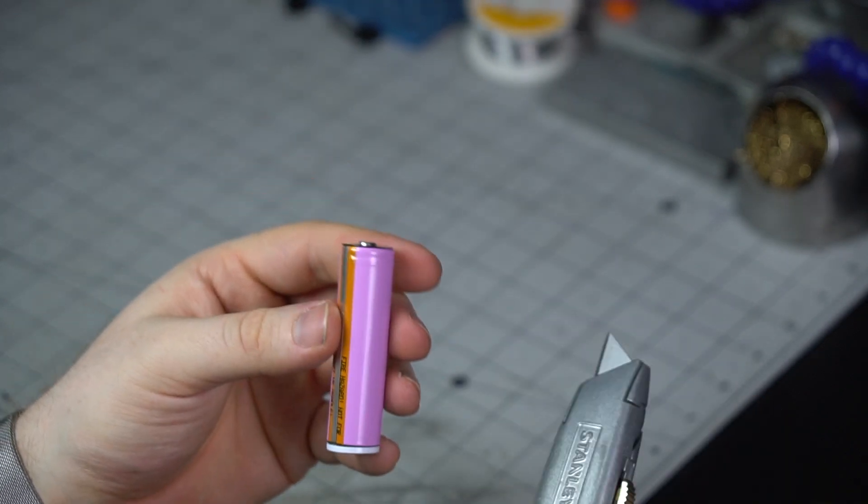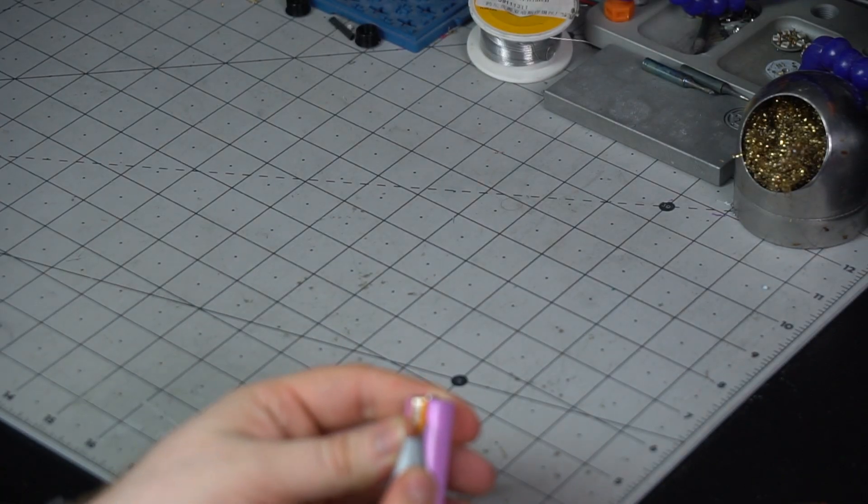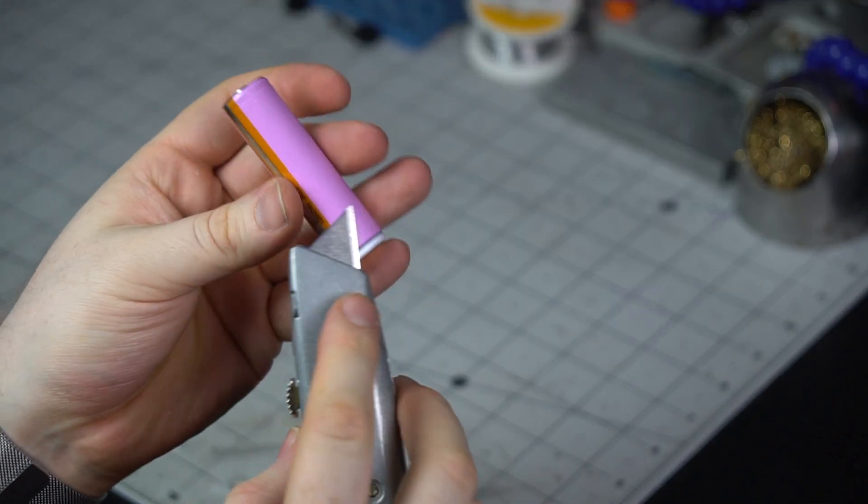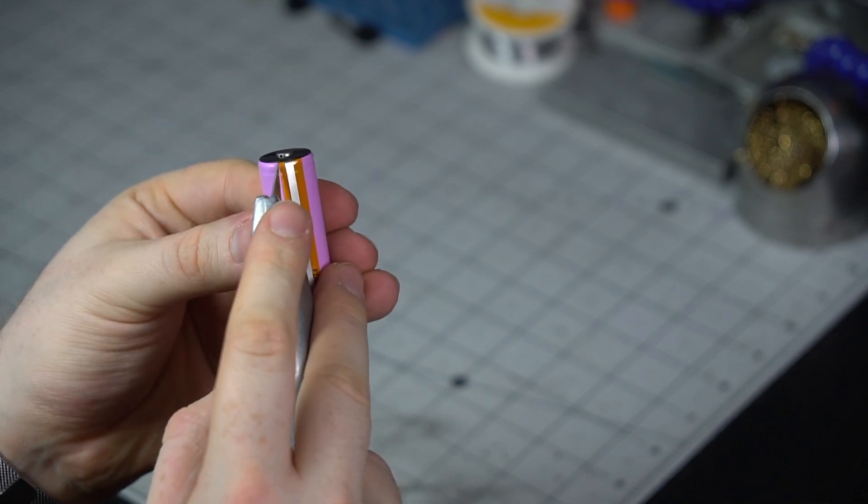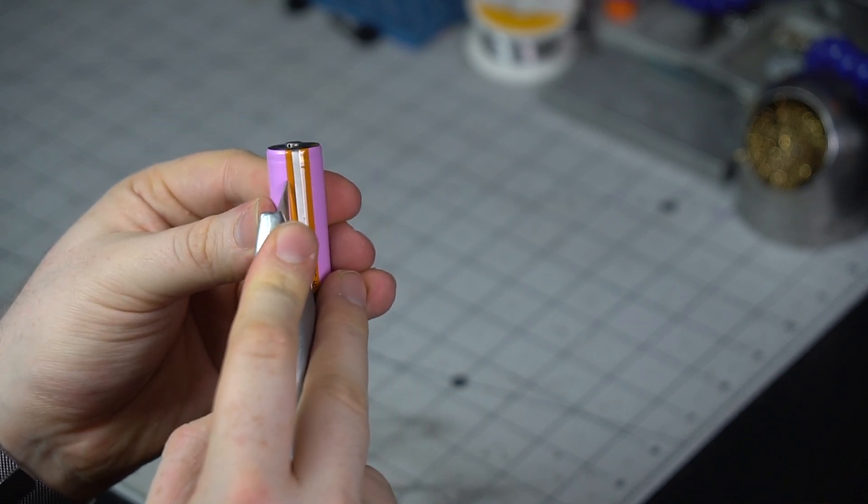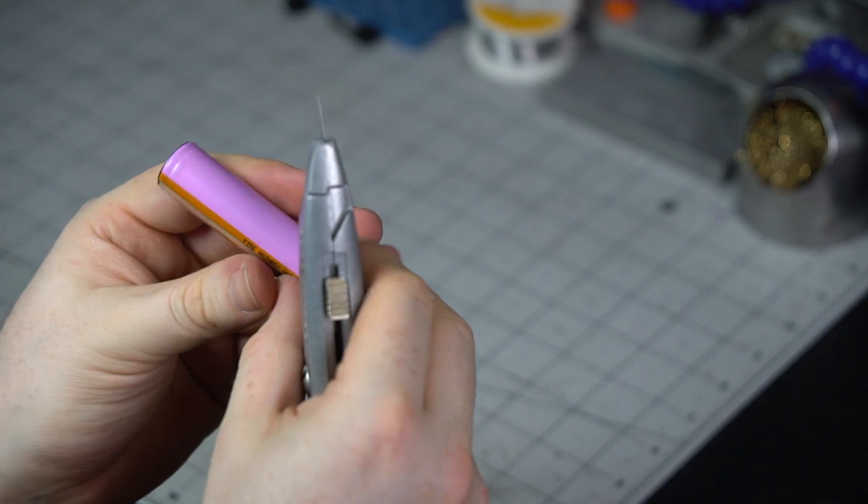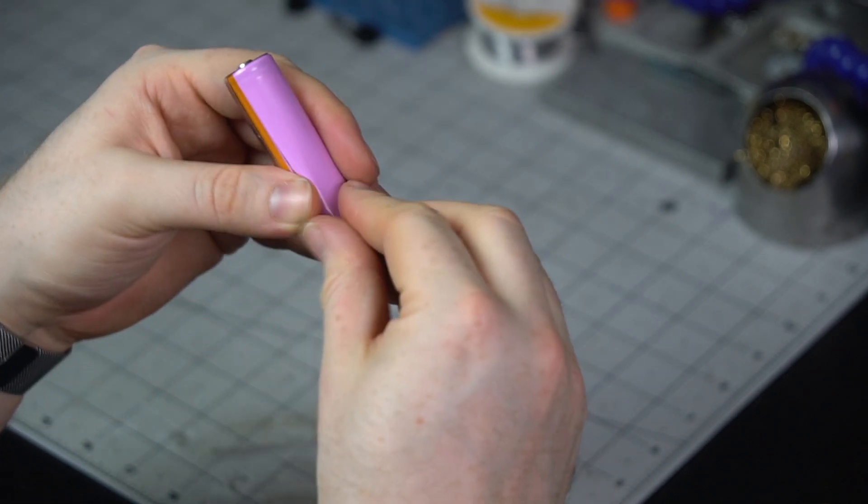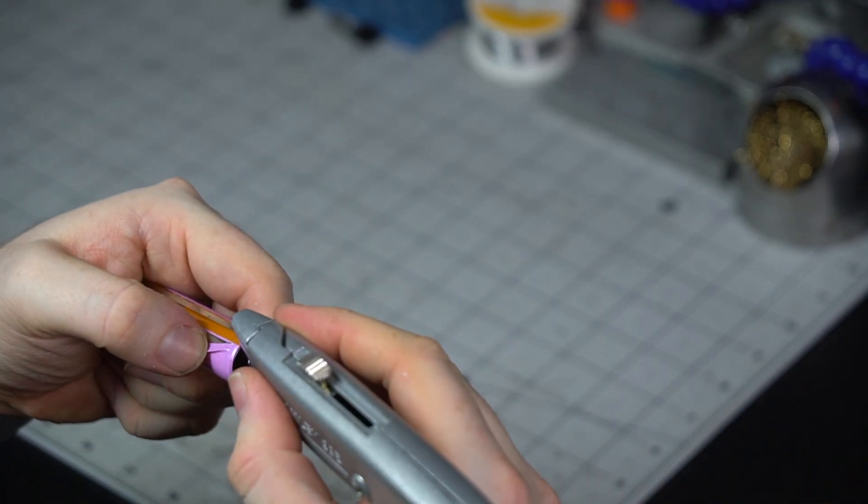So I just go down the line here and you're just scoring it really. You don't want to be actually cutting into the battery or anything like that because we don't want to cause any damage. And we want to score along here as well. I'm just going to pry it off a little bit. And we'll get to here, so you want to have it cut here as well.